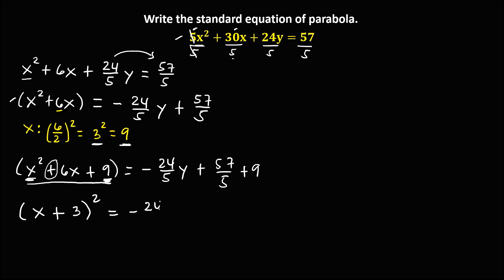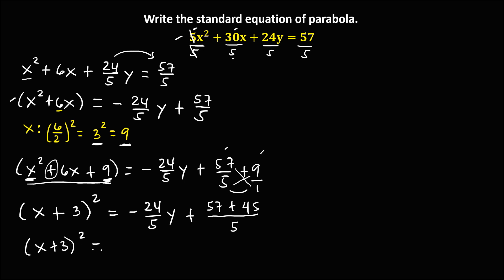So bring down negative 24 over 5y, then plus. To simplify 57 over 5 plus 9, using the butterfly method: 9 is over 1. So 57 times 1 is 57, then plus 5 times 9 is 45, all over 5 times 1, that's 5. Then simplify: so we have x plus 3, quantity to the power 2, equals negative 24 over 5y, then plus. 57 plus 45 is 102 over 5.